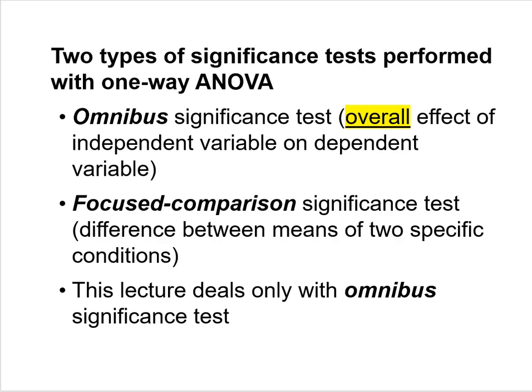Analysis of variance is more complicated than an independent-samples t-test because when you do ANOVA, there are actually two kinds of significance tests performed. There is an omnibus significance test, which is the test of the overall effect of your independent variable on the dependent variable. With the omnibus test, you're asking: did my independent variable have any kind of overall effect on the dependent variable?